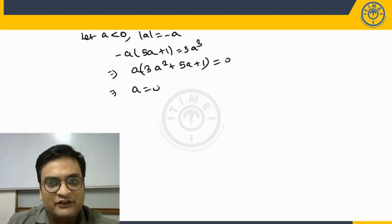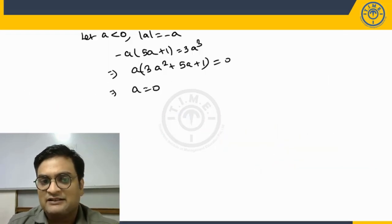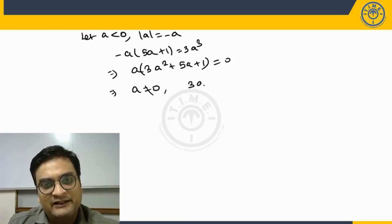So here we get a equal to 0. But since we take a as less than 0, this is not possible. And the second is 3a square plus 5a plus 1 as 0.